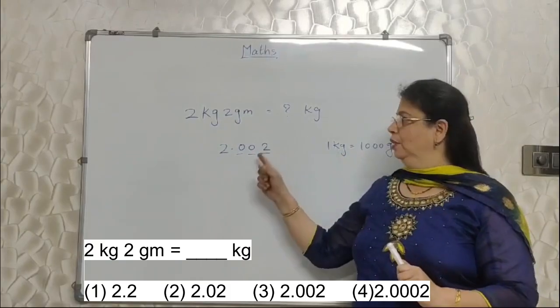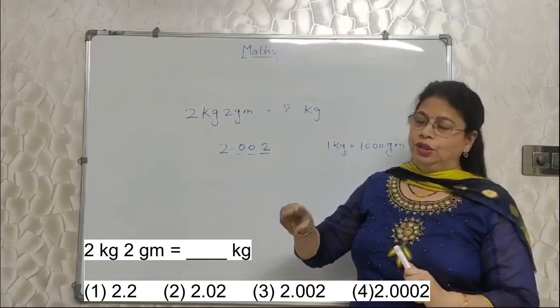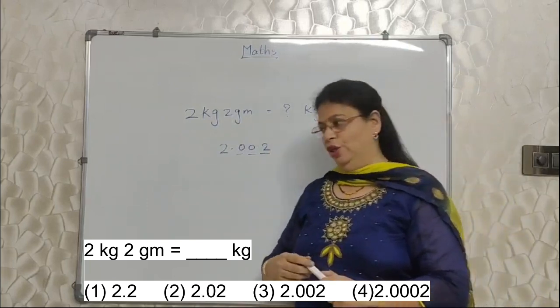And then you are supposed to make use of those places here. 3 0s, 3 places. 2 0s, 2 places only. Chalo.